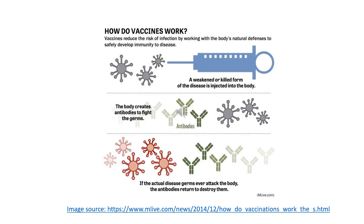So in summary, how does a vaccine work? A weakened or killed form of the disease is injected into the body. The body creates antibodies to fight the germs. If the actual disease germs ever attack the body, the antibodies return to destroy them.